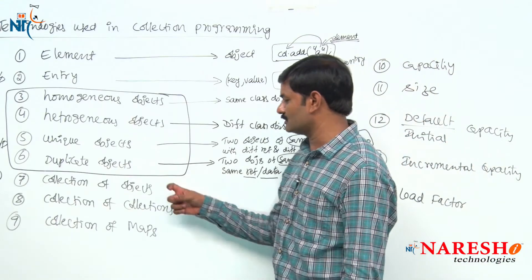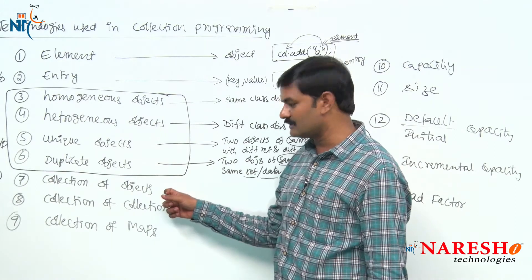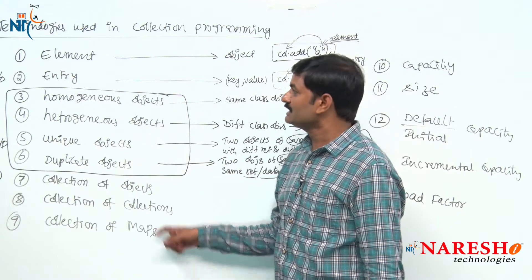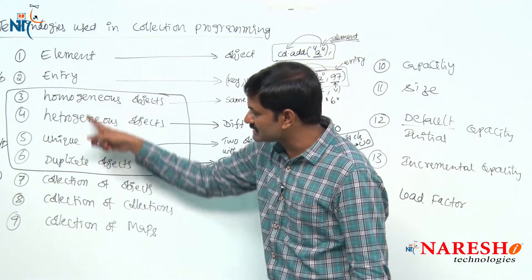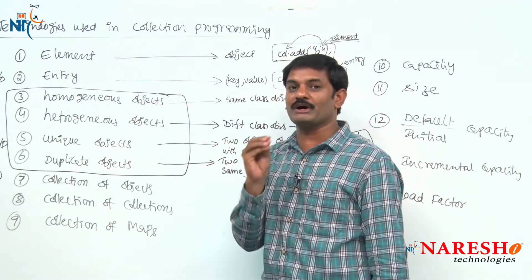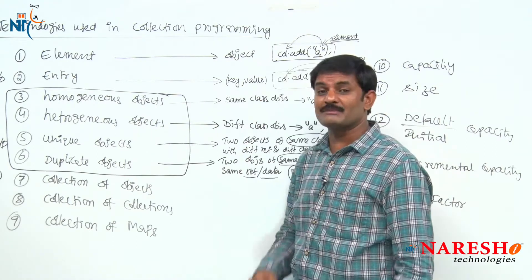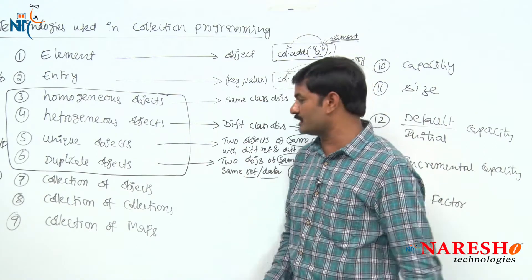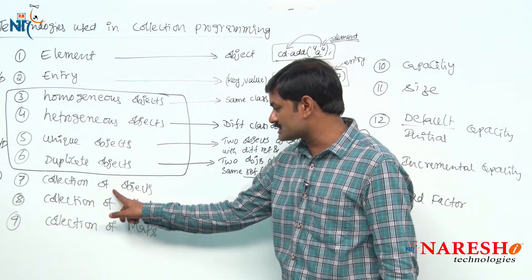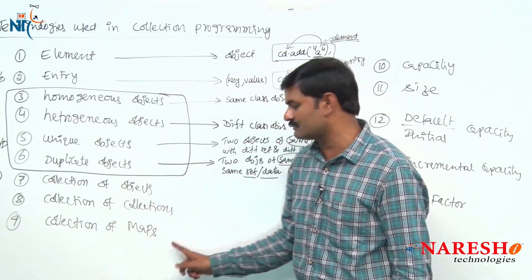The most important story from the project's point of view is the collection of objects, collection of collections, and collection of maps. These first six points are very important from an interview point of view and programming understanding point of view. From collection project development point of view, these next three terms are important: collection of objects, collection of collections, collection of maps.